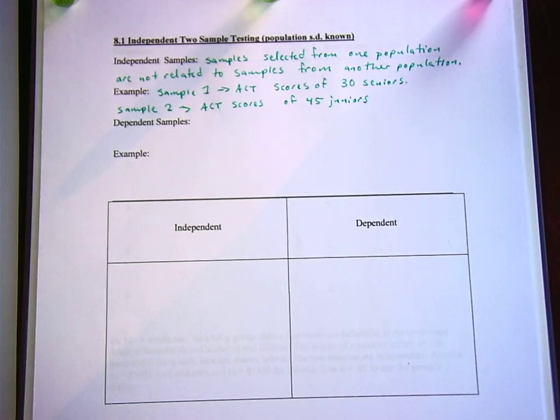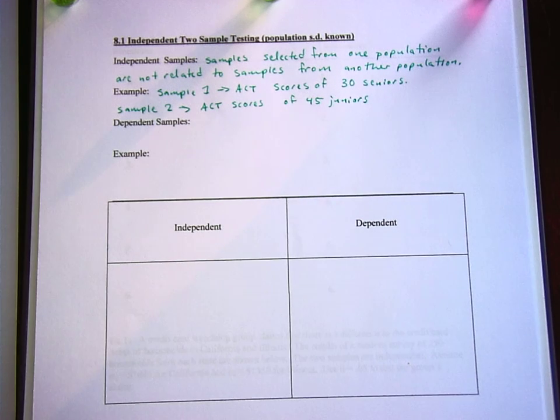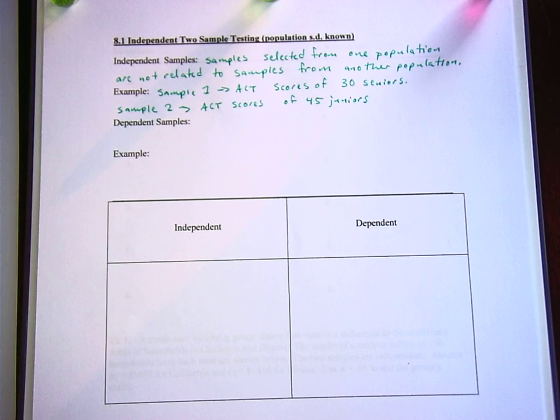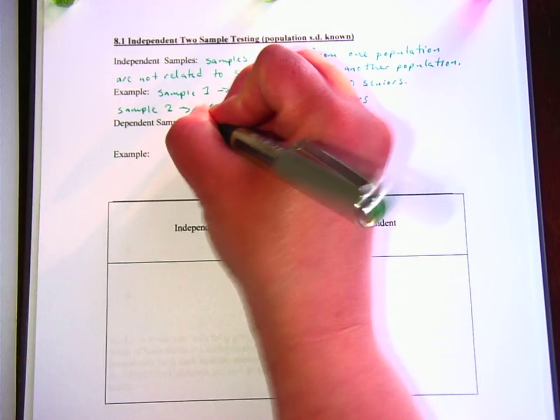So you can really tell if things are independent or dependent without even thinking about them because if they're dependent that means that they have like a one-to-one correspondence. These are like paired samples.